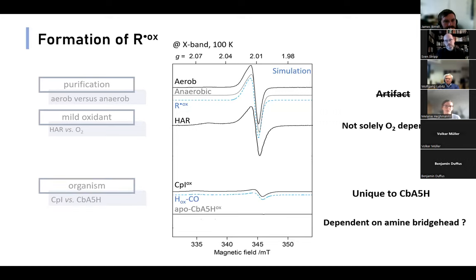Then we changed organism and looked at the well-characterized hydrogenase I from Clostridium pasteurianum. There we could only detect the H-ox-CO state at elevated temperatures. As you can see in the apo enzyme, R^ox is absent.